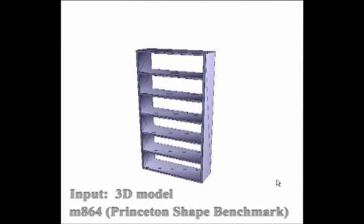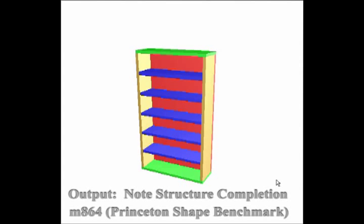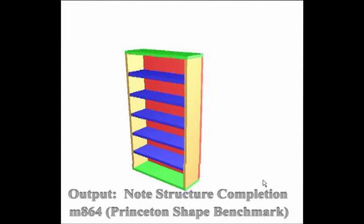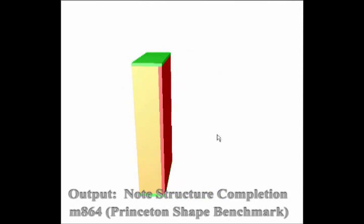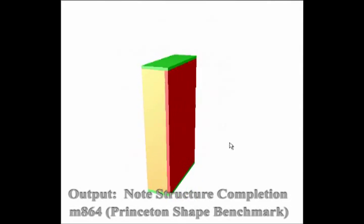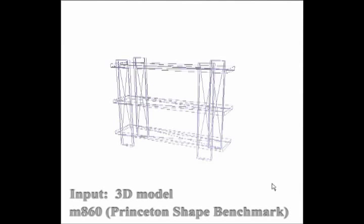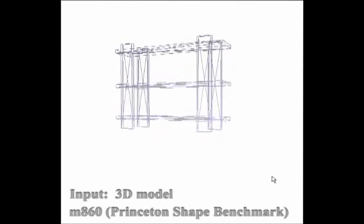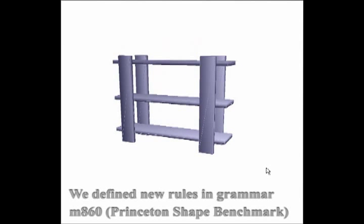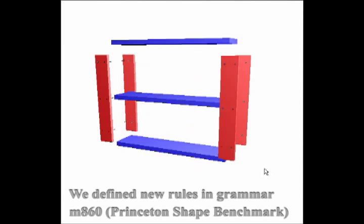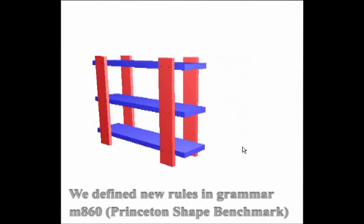This example shows structure completion of the back piece. Our original cabinet grammar fails with this example, so we define new rules to the same grammar and our method succeeds.